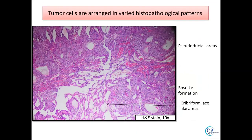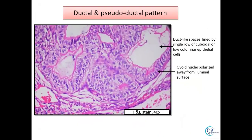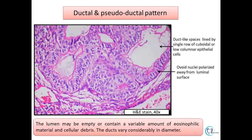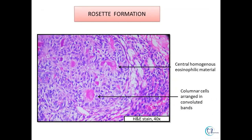The tumour cells are arranged in varied histopathological patterns. Some areas show ductal and subductal areas; some areas show convoluted bands forming rosettes; and other areas may form cribriform patterns. The ductal and subductal areas show ducts lined by a single palisaded layer of cuboidal to low columnar cells in which the nuclei are arranged away from the lumen. The lumen may be empty or contain eosinophilic material, and these ducts show variable sizes. Other areas show solid nodules of spindle or cuboidal cells arranged to form rosettes with homogeneous eosinophilic material in their centers.